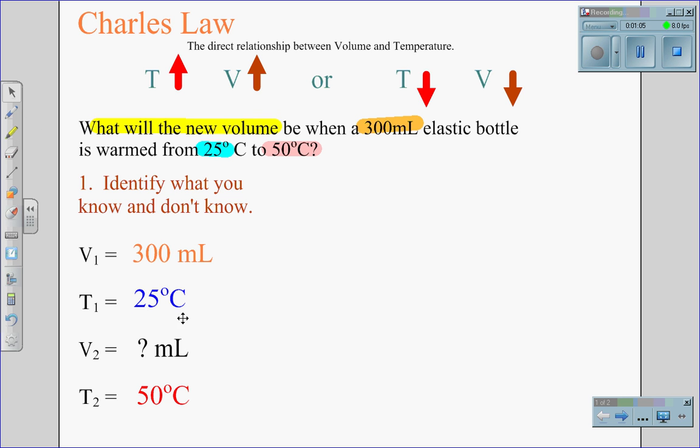We are reminded that in all gas law equations, we have to change Celsius to Kelvin. In order to do this, we add 273. 25 degrees Celsius plus 273 is 298 Kelvin. 50 degrees Celsius plus 273 is 323 Kelvin.